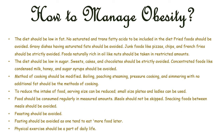The diet should be low in fat. No saturated or trans fatty acids should be included, and fried foods should be avoided. Gravy dishes with saturated fat should be avoided, and junk foods like pizzas, chips, and french fries should be strictly avoided. Foods naturally rich in oil, like nuts, should be taken in restricted amounts. The diet should be low in sugar; sweets, cakes, and chocolate should be strictly restricted, and concentrated foods like condensed milk, honey, and sugar syrups should be avoided. Methods of cooking should be modified — boiling, poaching, steaming, pressure cooking, and simmering with no additional fat should be used.